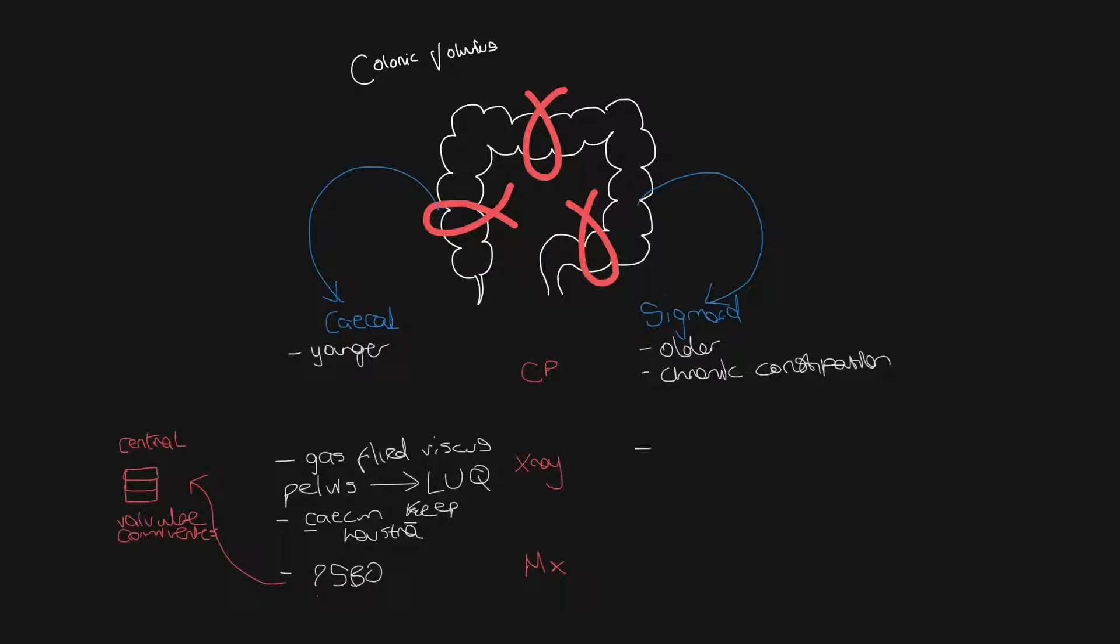In contrast to this, in sigmoid volvulus, you get a dilated gas-filled viscous, which has a very typical U-shape or coffee bean shape, as demonstrated here. Because the sigmoid is the distal most part of the large bowel, you eventually will get large bowel obstruction.